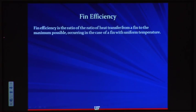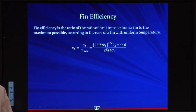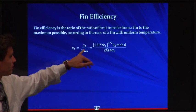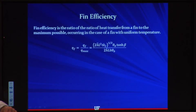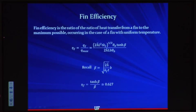Fin efficiency is the ratio of the heat transfer from a fin to the maximum possible heat transfer, which occurs when the entire fin is at a uniform temperature as opposed to having a temperature gradient. We have both qf derived here and qmax from last lecture. Dividing them, and recalling what β equals, we get the expression for fin efficiency. At our optimum — β equal to 1.419 — the efficiency of the fin is 63%.